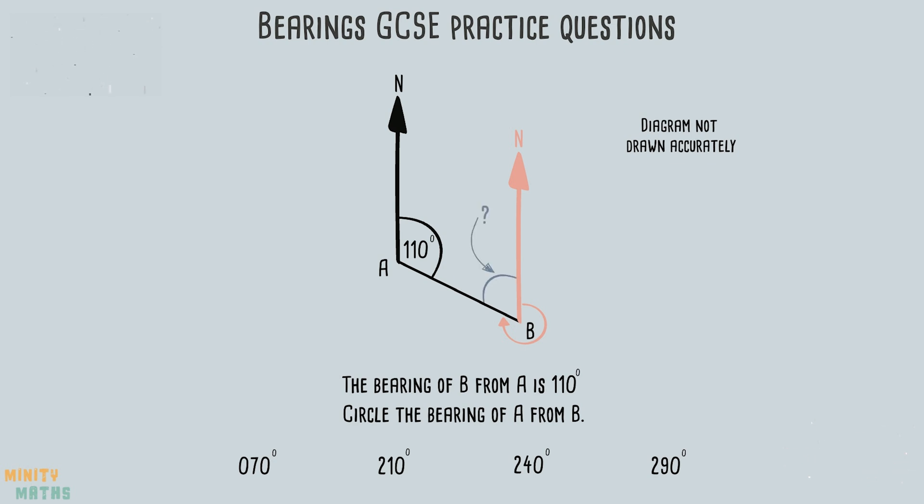Let's calculate this angle. We know that allied angles add up to 180 degrees. So this angle equals 70 degrees. Finally we know that angles around a point add up to 360 degrees so we can take this 70 degrees away from 360 to find the angle of the bearing we need.